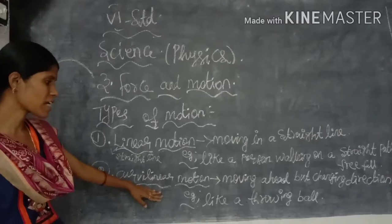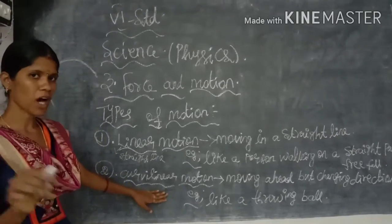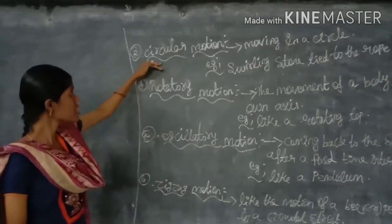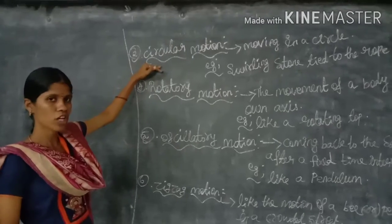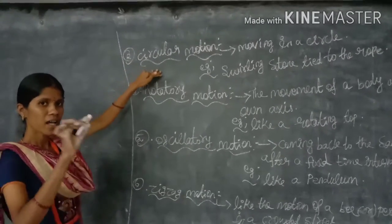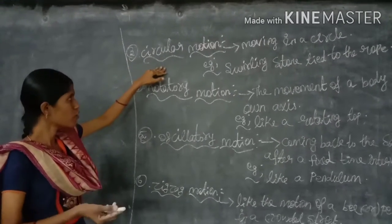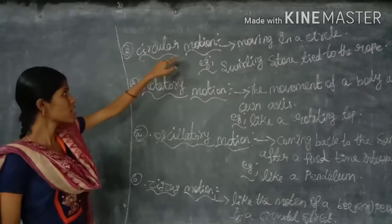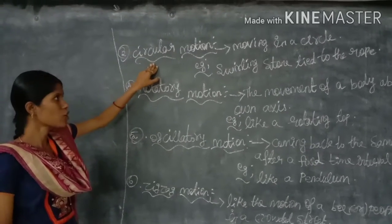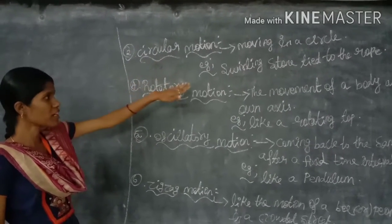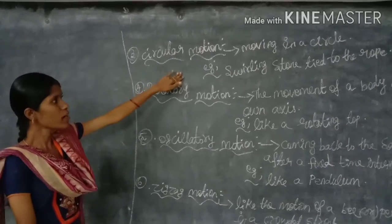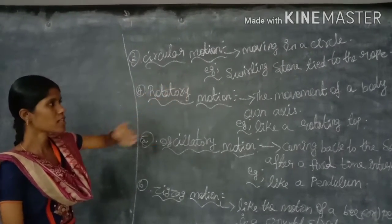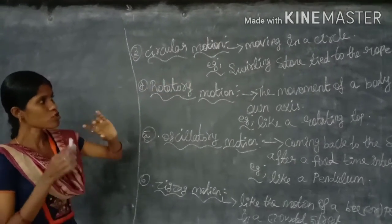The third type of motion is circular motion. The motion is taken along a circular path — that is known as circular motion. Moving in a circle. For example, a stone tied to the end of a rope and rotating in a circular direction.